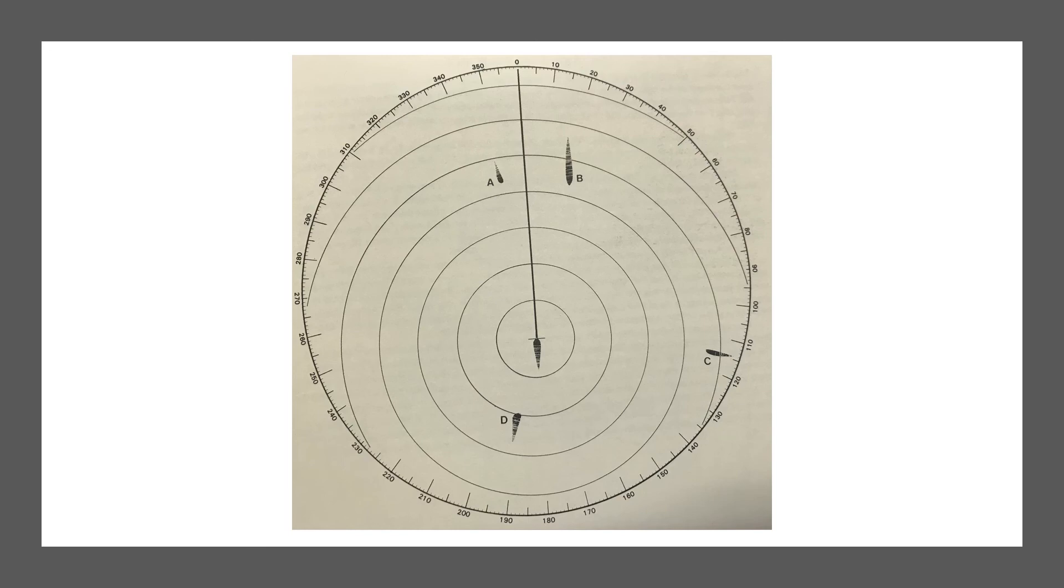To assess the risk of collision, the relative motion of a target must be known, and this is the one thing that the true motion display does not offer. For that, you have to start plotting. Now look at this picture here: there are four targets appearing on a six-mile range.